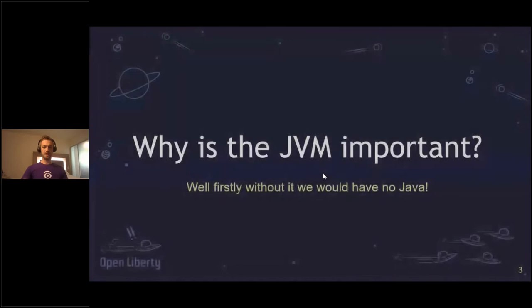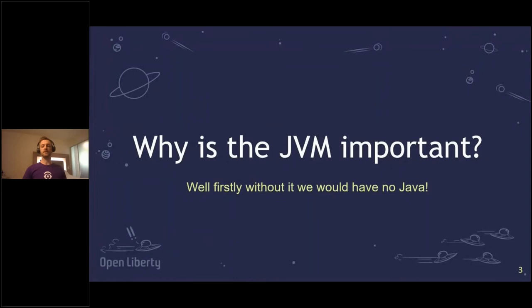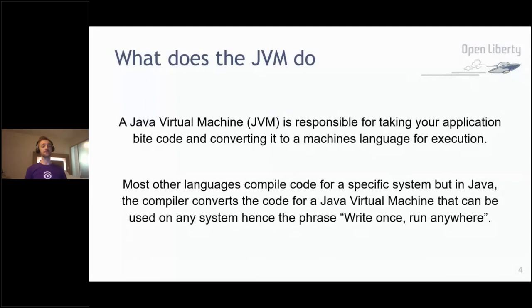Why is the JVM important? Well, without the JVM we wouldn't have Java, and Java's been around for about 27 years now. The JVM is the Java Virtual Machine and it's responsible for taking your application bytecode and converting it into machine language for execution. Most other languages compile code for a specific system, but in Java the compiler converts code for the JVM, which can be used on any system — hence the phrase 'write once, run anywhere.'